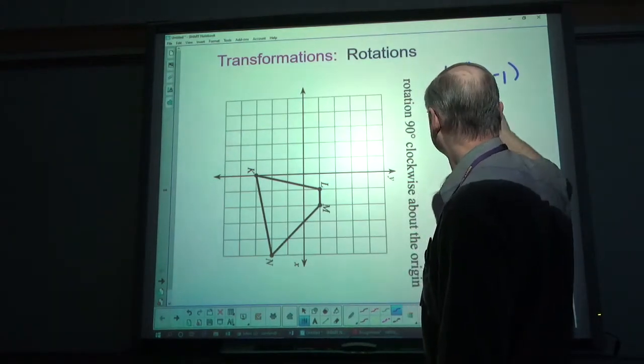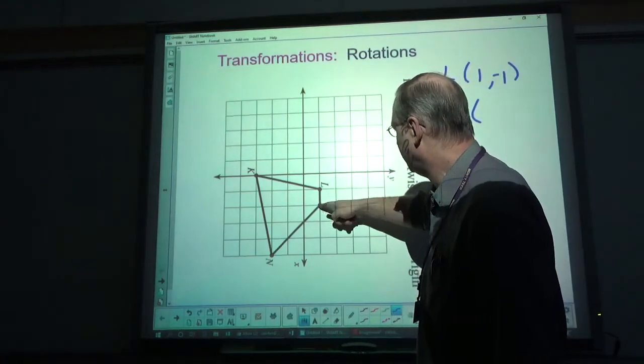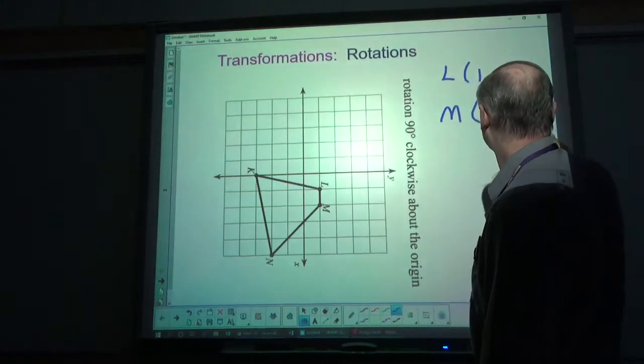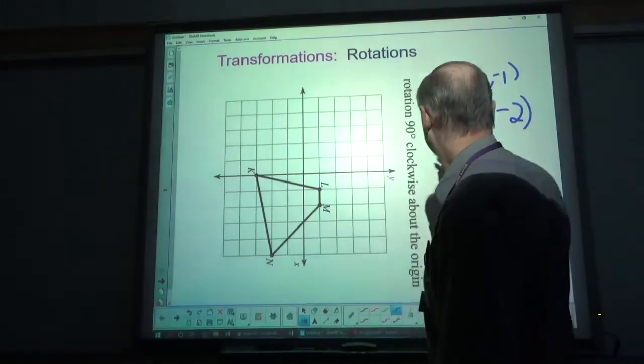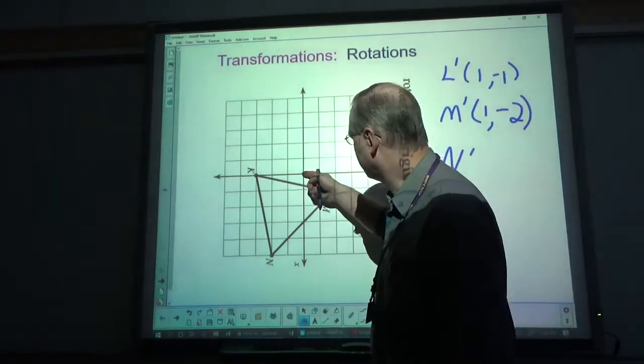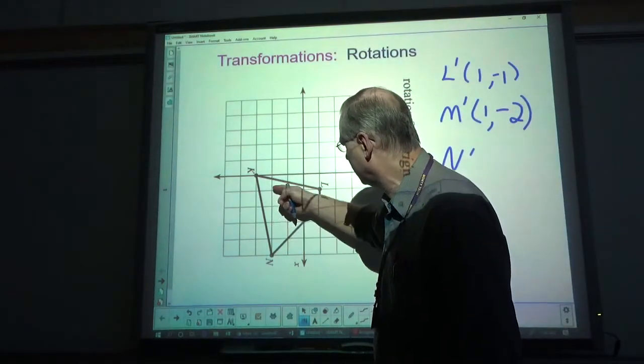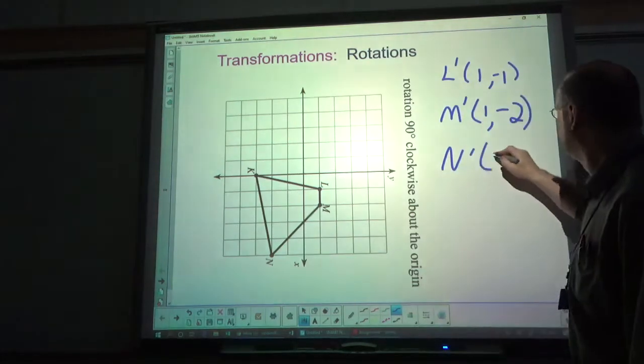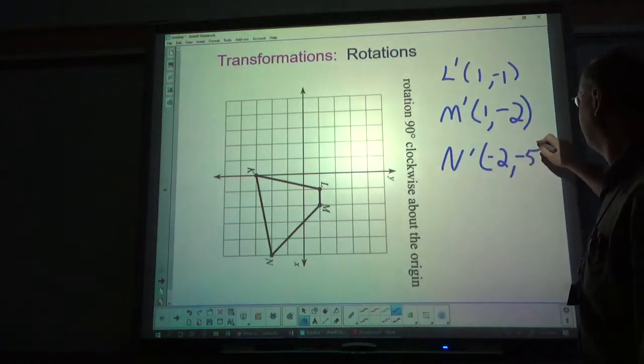M ends up at 1, negative 2. N, these are prime by the way, ends up at negative 2, negative 5. Negative 2, negative 5.